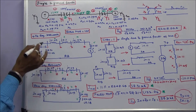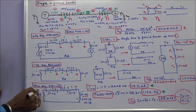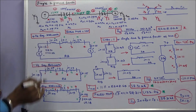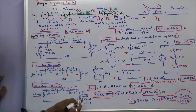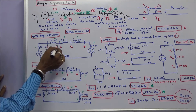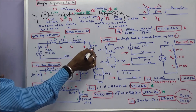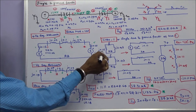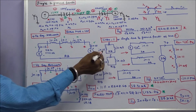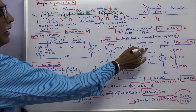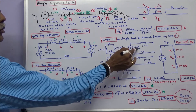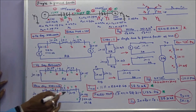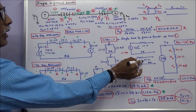First step: we draw the positive sequence network, negative sequence network, and zero sequence network. For the positive sequence network with fault at bus 1, we have j0.15, and the series value j0.09 plus j0.1 plus j0.09 plus j0.15 equals j0.43. This is the reference bus. These two are connected in parallel, giving equivalent Thevenin reactance of j0.11. Prefault voltage is 1.0. Removing the sources gives the negative sequence network, with equivalent Thevenin reactance also j0.11.